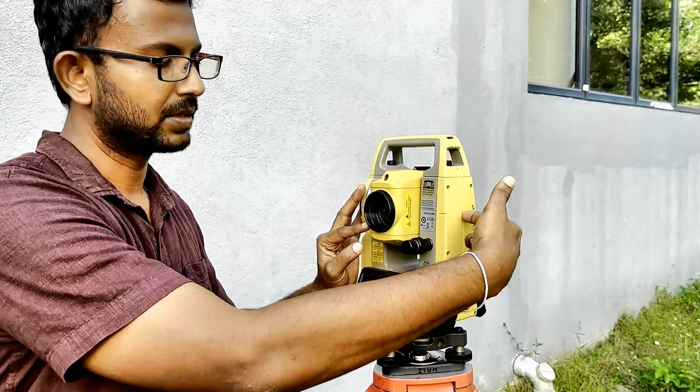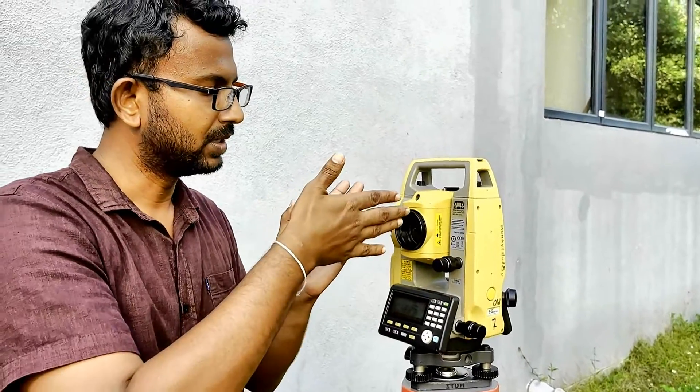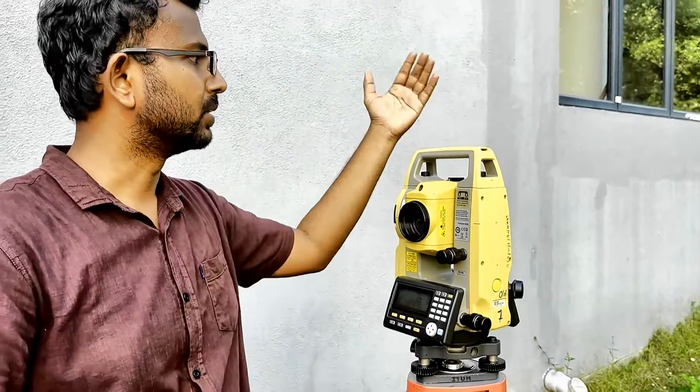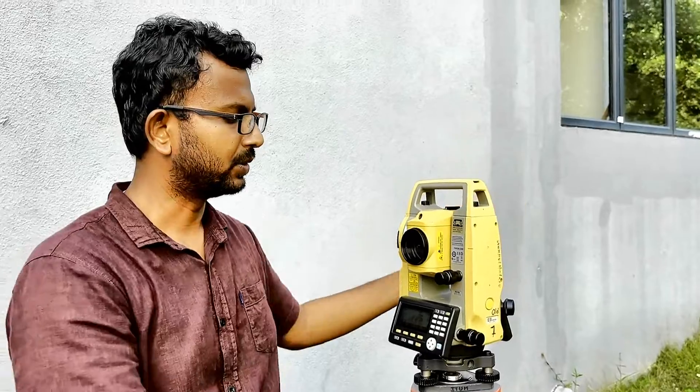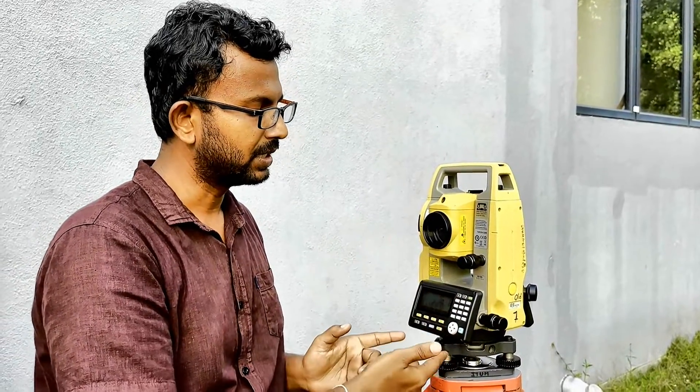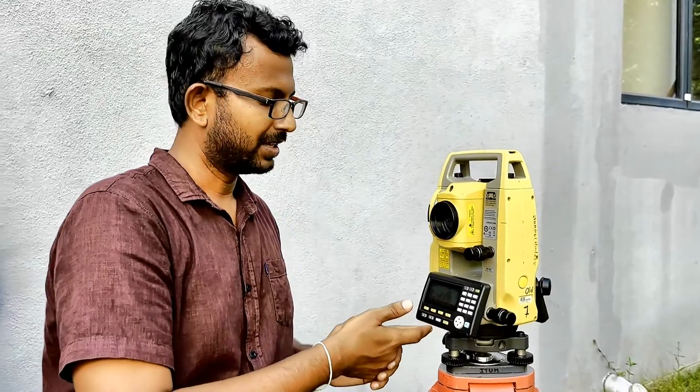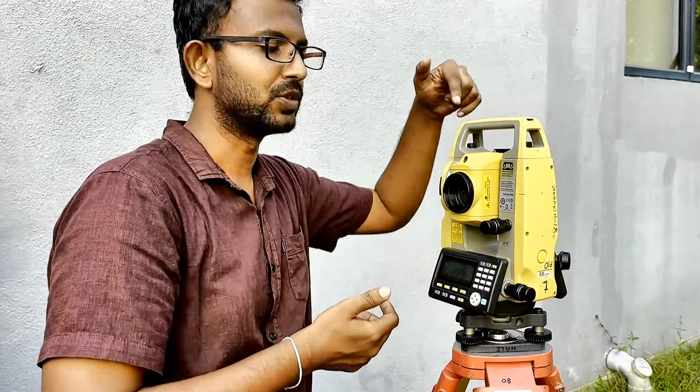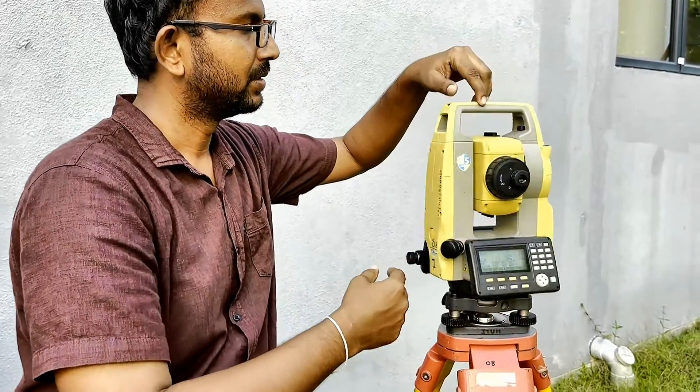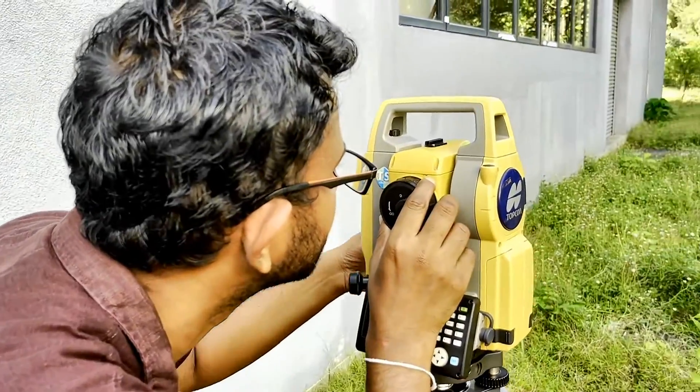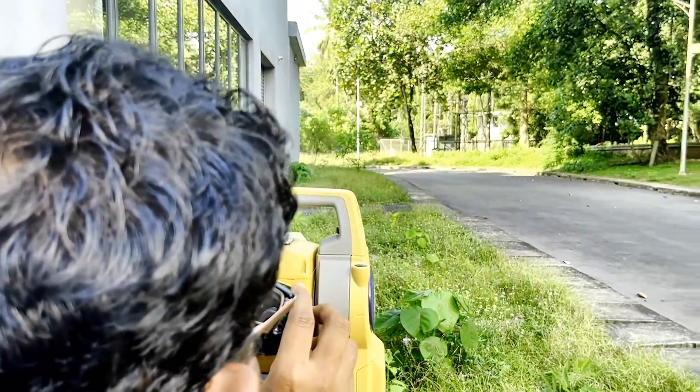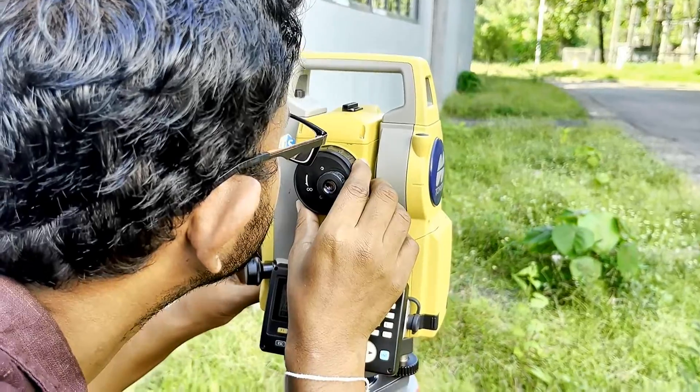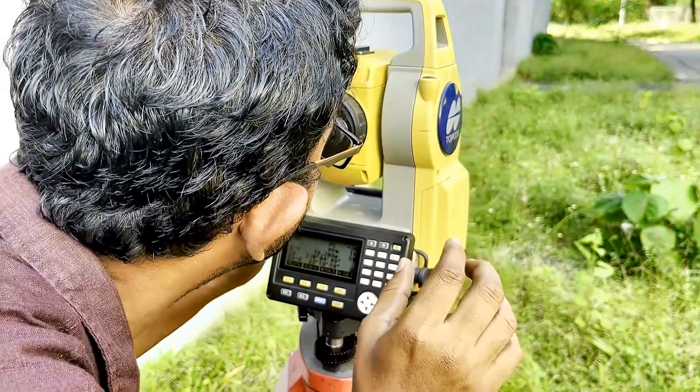So now we need to get the face right reading. How we are going to get the face right reading? So we need to transit the telescope above the Trunnion axis. So you know that this angle reading increases when this upper plate is turning about the instrument axis. Now the upper plate is not turning. In that case the angle is not going to change but the direction is going to change by 180 degrees because we are going to transit the telescope about Trunnion axis.